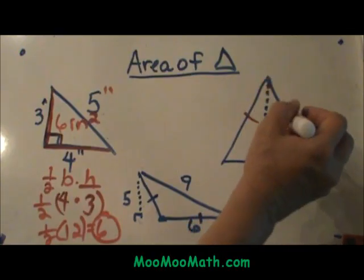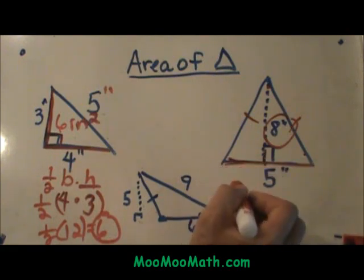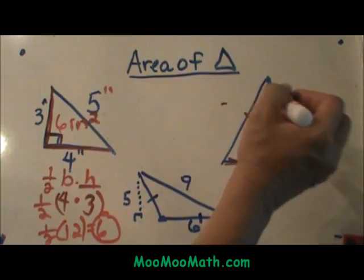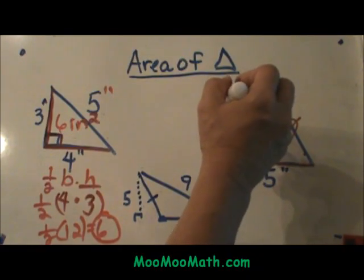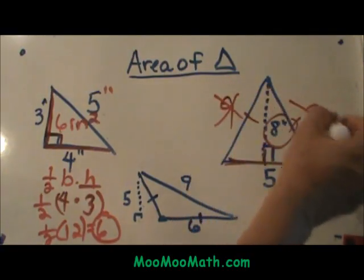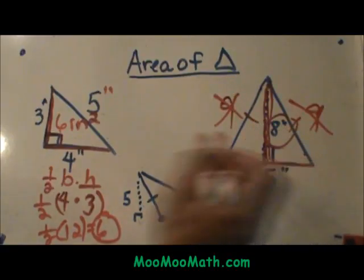This altitude is eight and it touches the base that is five. Even if I had these two sides, let's say this side was nine and this side was nine, I wouldn't use those because I have altitude or the height and the base already given.